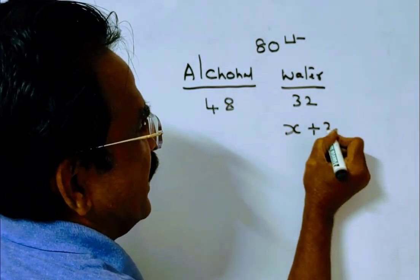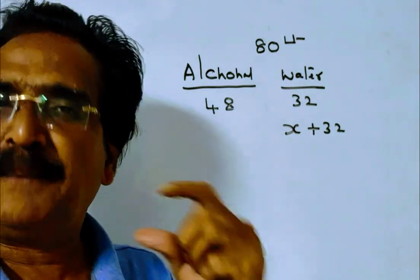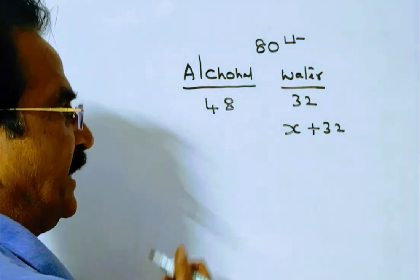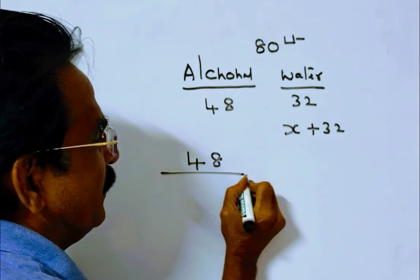The water content is x plus 32. Now the alcohol percentage - the alcohol percentage is alcohol divided by total mixture.